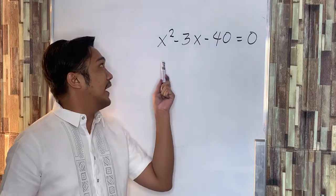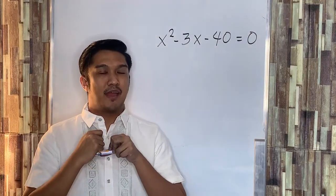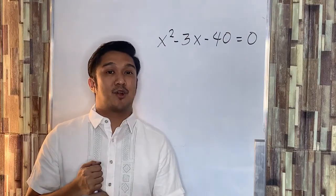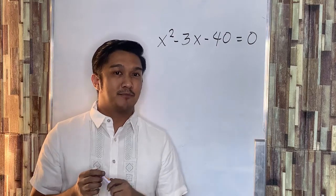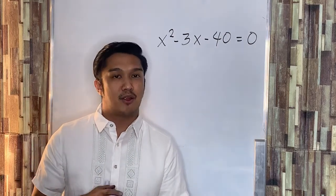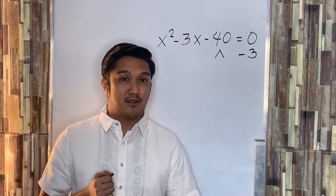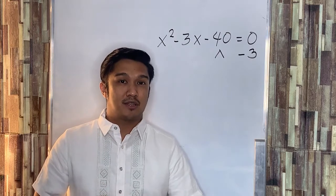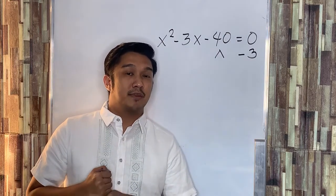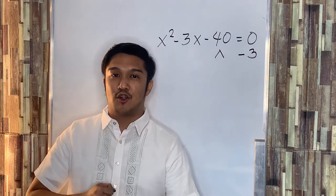Now, let's consider x squared minus 3x minus 4 is equal to 0. The first thing that we need to do is get the factors of the last term, which is negative 4, so that the sum will be equal to the coefficient of the linear term, which is negative 3. Since the constant term is negative, therefore the two factors have different signs, and the sum must be equal to negative 3, which means that the sign of the larger factor is negative.